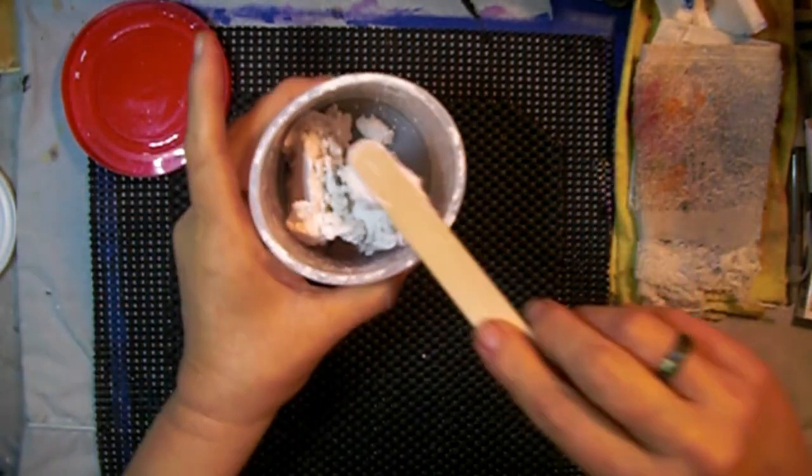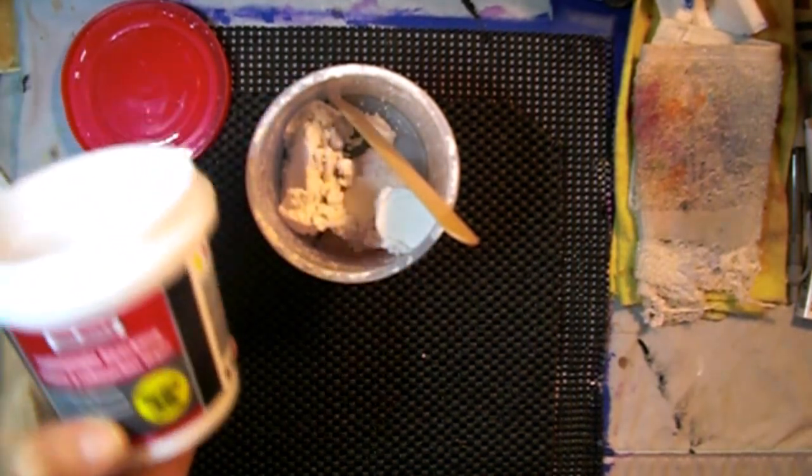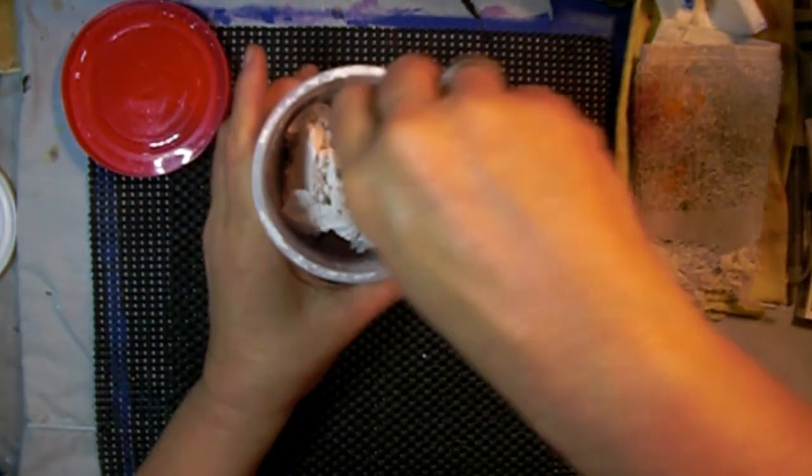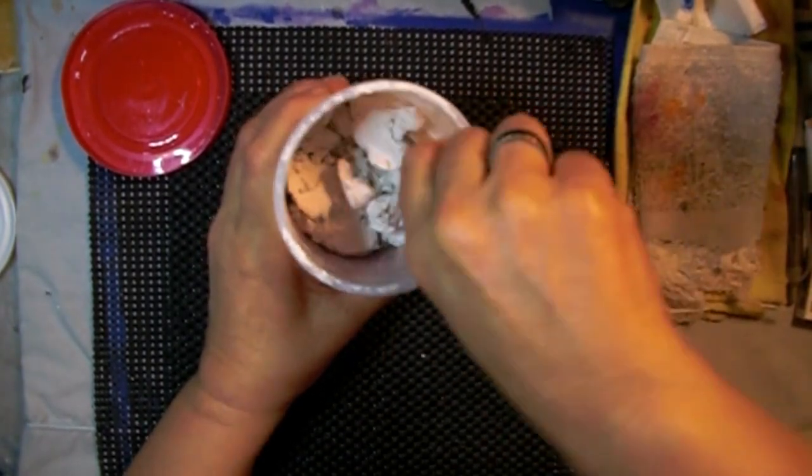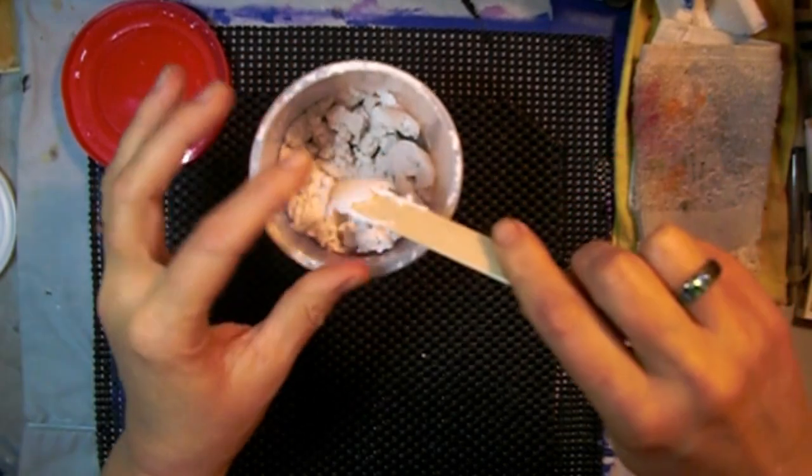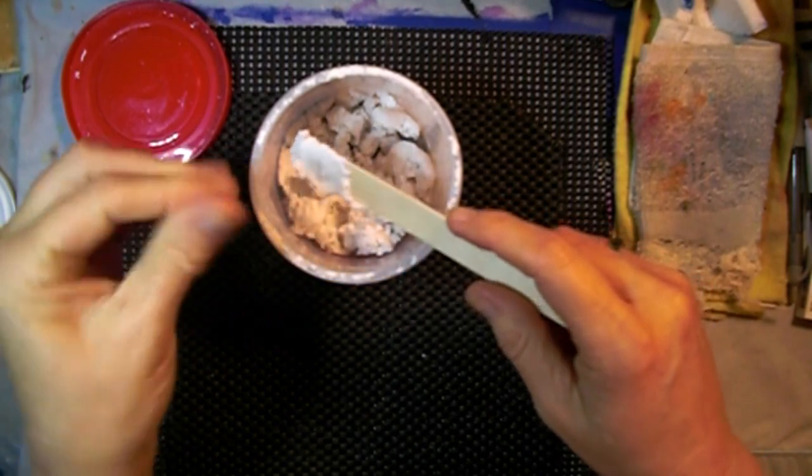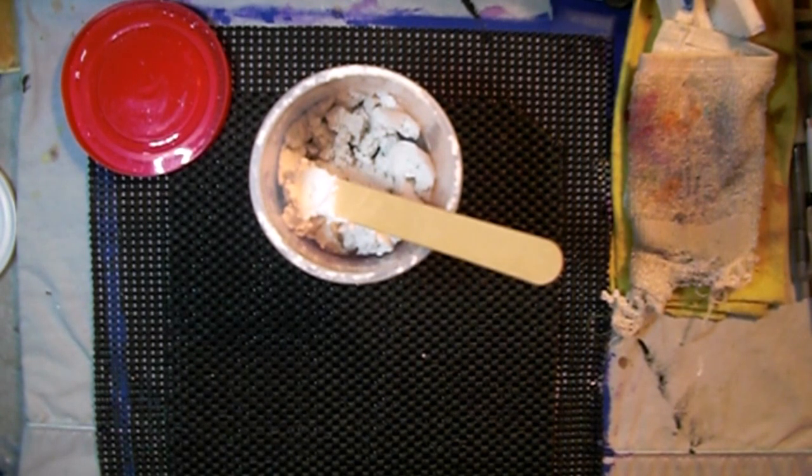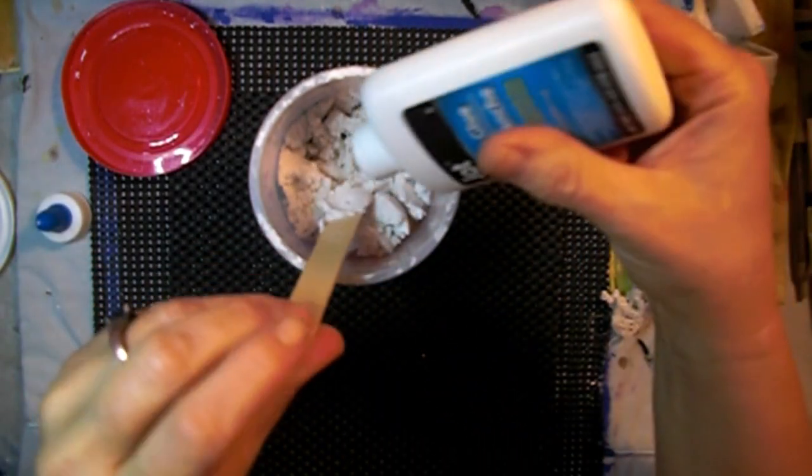Got half of what was in there. So what was that? That was the six ounce container, so about three ounces. Apparently that's real light and fluffy. It feels like a wet chalk. So squeeze some in there, a good amount.